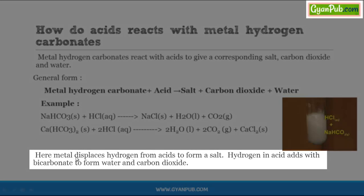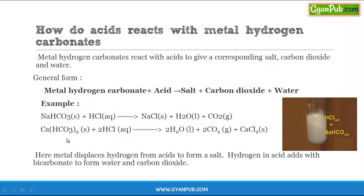In summary, the metal displaces hydrogen from acids to form a salt, and the hydrogen from the acid combines with the bicarbonate ion (HCO3⁻) — also called the hydrogen carbonate ion — to form water and carbon dioxide.